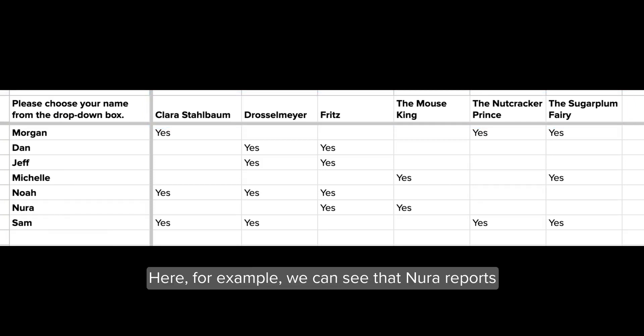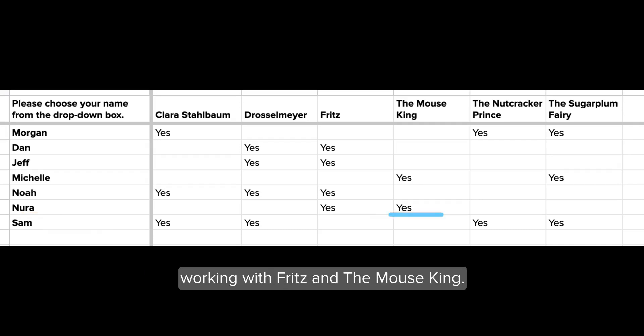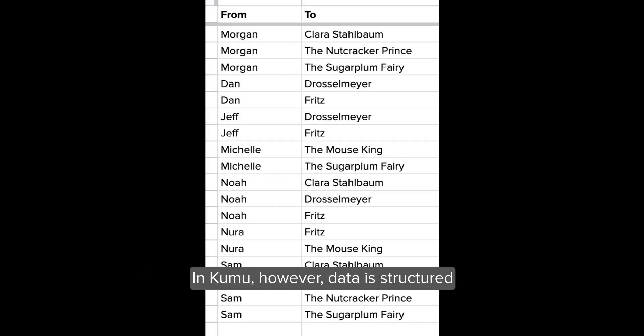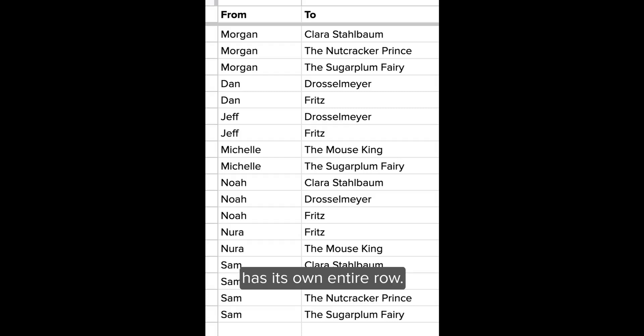Here, for example, we can see that Neuro reports working with Fritz and the Mouse King. In Kumu, however, data is structured so that each connection between individuals has its own entire row, looking more like this.